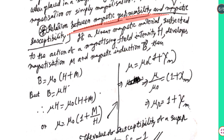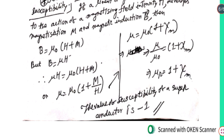Relation between magnetic permeability and magnetic susceptibility: If a linear magnetic material is subjected to a magnetizing field of intensity H, it develops magnetization M and magnetic induction B, where B equals μ₀(H + M). Since B equals μH, we get μH equals μ₀(H + M), which simplifies to μ relative equals 1 plus χ, relating relative permeability to magnetic susceptibility.